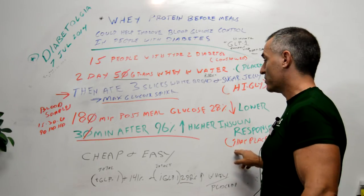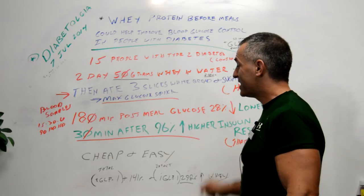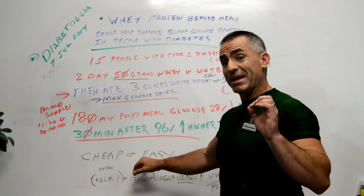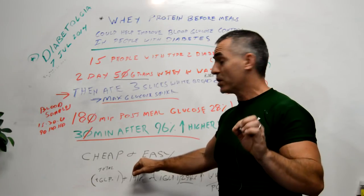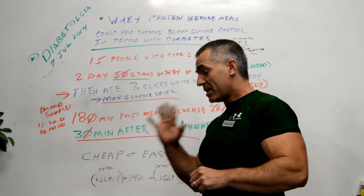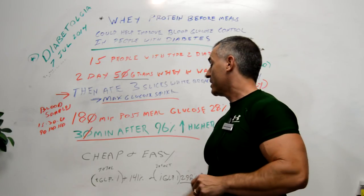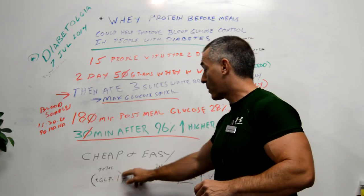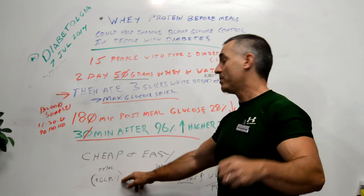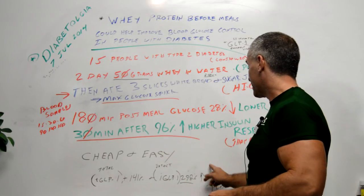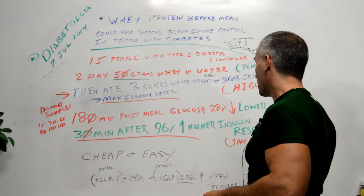The researchers concluded this is a cheap and easy to administer form of treatment for diabetics who want to maintain better control over their blood glucose levels. As a side note, in the whey protein group only, total GLP-1 was 141% over the placebo—this is the technical part. And the intact iGLP-1 was 298% higher in the whey group than the placebo.